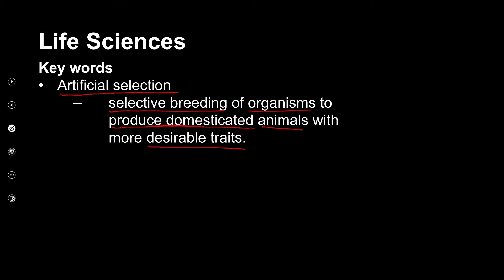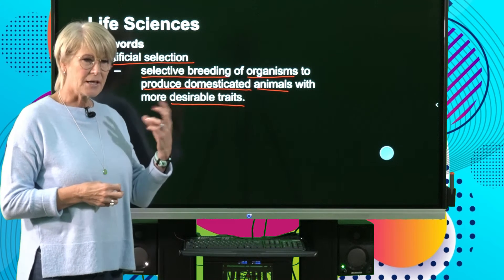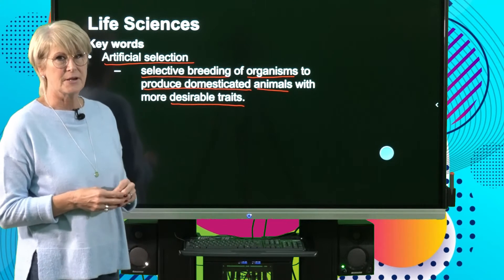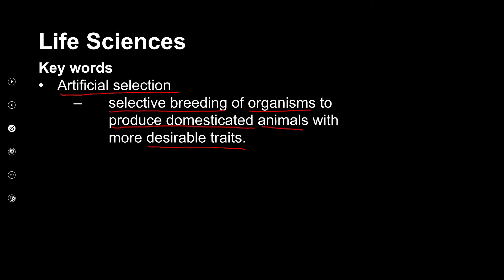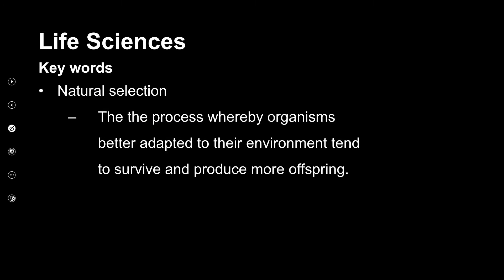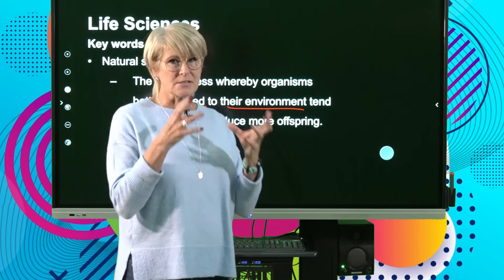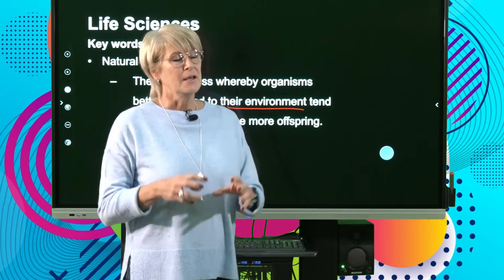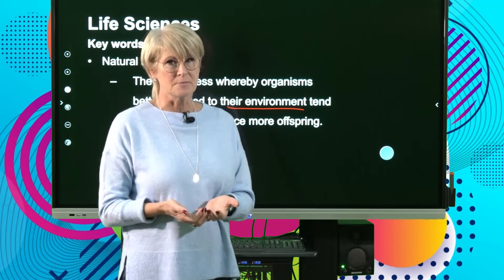Artificial selection is basically humans selecting certain characteristics that satisfy their own needs. Natural selection, which is the opposite, is the process whereby organisms better adapted to their environment tend to survive and produce more offspring. There, it's nature selecting the characteristics, which then allows the organisms to survive.